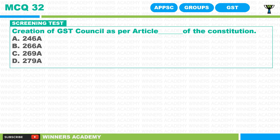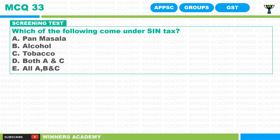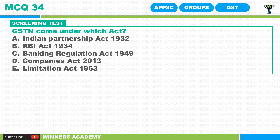MCQ 32: Creation of the GST council was done as per which article of the constitution — 246A, 266A, 269A, or 279A? MCQ 33: Which of the following comes under syntax? MCQ 34: GSTN comes under which act — Indian Partnership Act 1932, RBI Act 1934, Banking Regulation Act 1949, Companies Act 2013, or Limitation Act 1963?